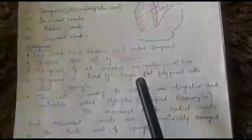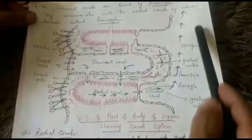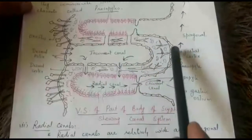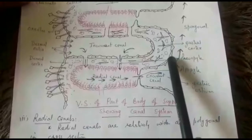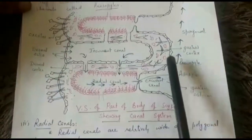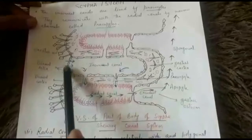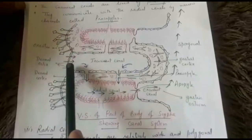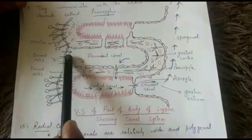In the diagram showing the canal system, the spongocoel is present in the center and opens out by the osculum, and it is lined by flattened cells known as pinacocytes. The second type of canal is the incurrent canal. The incurrent canal is narrow and squarish in cross section, and it lies below the groove.